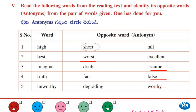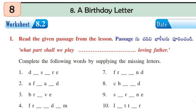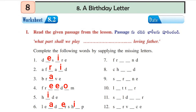Let's move on to worksheet number 8.2. In the first roman, we have given some missing letter words. These are taken from the passage 'What Part Shall We Play to Loving Father'. The words with their spellings: End — E-N-D. Child — C-H-I-L-D. Letter — L-E-T-T-E-R. Soldier — S-O-L-D-I-E-R. Service — S-E-R-V-I-C-E.